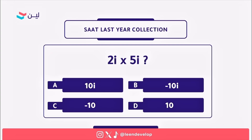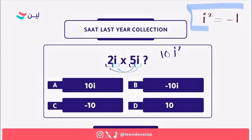The next question asks for the result of multiplying two imaginary numbers. We multiply the numbers together and the i's together: 2 multiplied by 5 equals 10, and i multiplied by i equals i². From the definition of the imaginary unit, i² equals minus 1 — it's very important to remember this. So 10 multiplied by minus 1 equals minus 10. The correct answer is C.